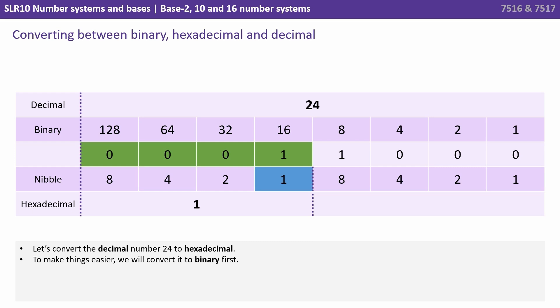So the left hand four digits, so that's the first nibble there. We have a 1 in the 1 column and then we have a 0, a 0 and a 0. So those first four binary digits represent 1 in hexadecimal. The right hand four digits, we have a 1 in the 8 column and then a 0, 0 and 0. So that's an 8 in hexadecimal. So 24 in decimal is 18 in hexadecimal. It's important you read it as 1, 8 and not as 18.